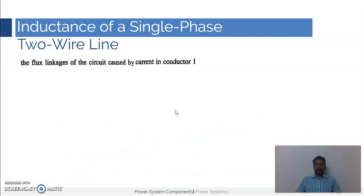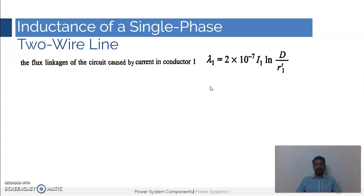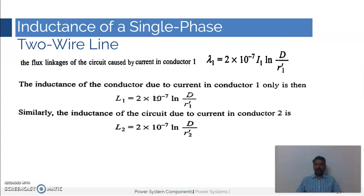With these assumptions we can easily write the flux linkages using the same equation discussed in previous videos. The flux linkages of the circuit caused by the current in conductor one alone can be written as: λ1 = 2 × 10⁻⁷ × i1 × ln(d / r1'), where r1' is the geometric mean radius of conductor one.